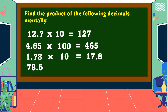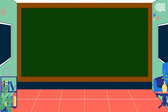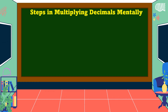Next: seventy-eight and five-tenths times one-hundred. The answer is equal to seven-thousand-eight-hundred-fifty. These are the steps in multiplying decimals mentally by one-tenth and one-hundredth.